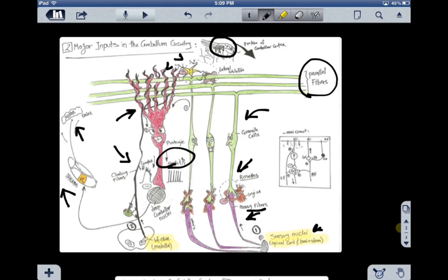The other input is from inferior olive, and that's why you see a little olive climbing, because they're climbing fibers. They go from the inferior olive in the medulla, climbing up, and synapse on the dendrites and the soma of the Purkinje cell, making complex and low-frequency spikes.